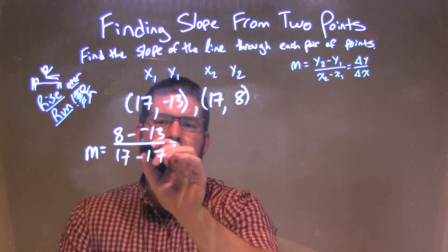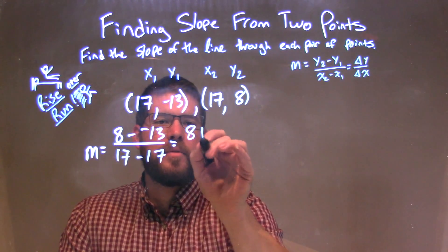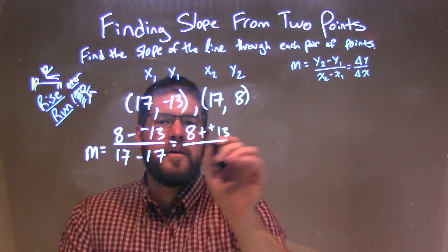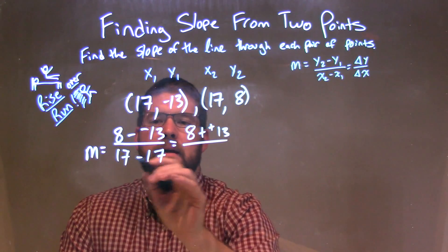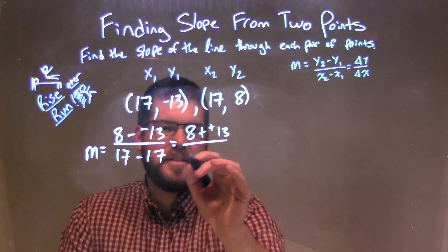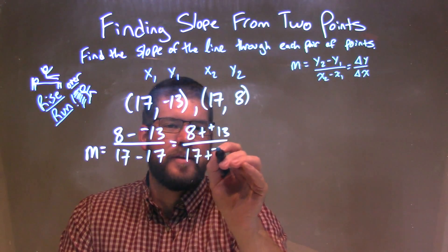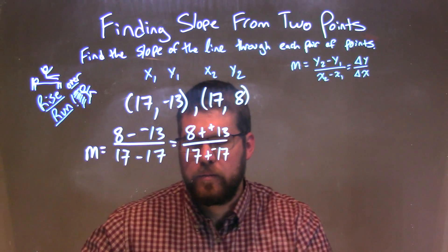Now this 8 minus a negative 13, I can write as 8 plus a positive 13, right? Two negatives make a positive theorem, subtracting negatives, adding a positive. And we have 17 minus 17, you can leave it like that, or you can write as plus a negative 17, up to you. It really doesn't matter.